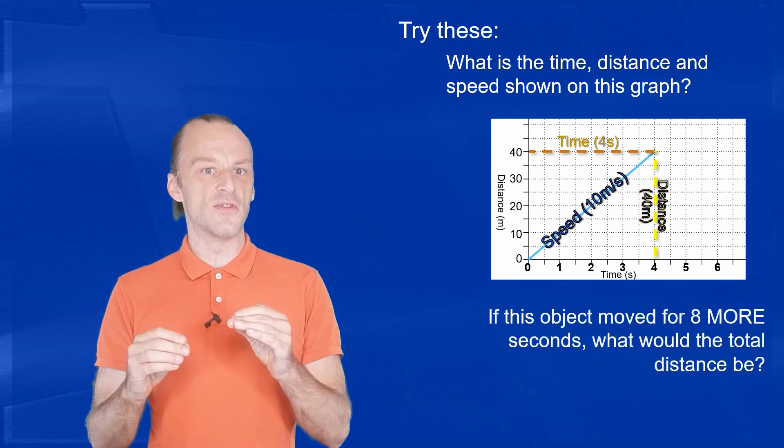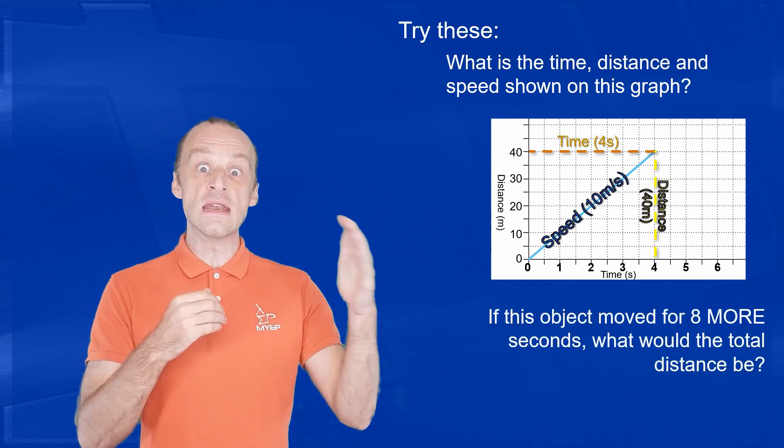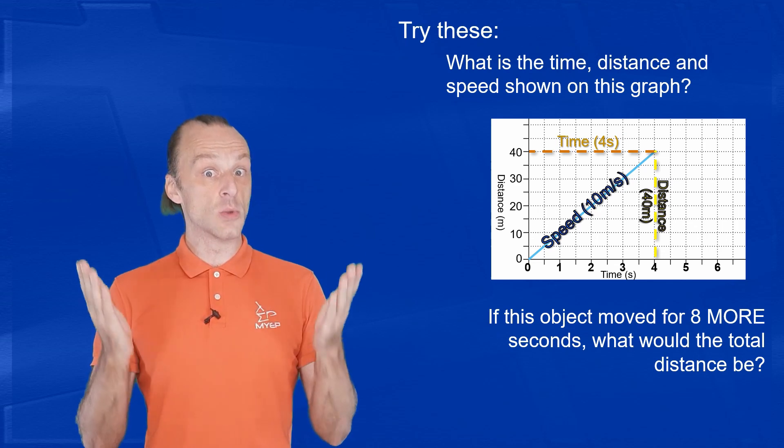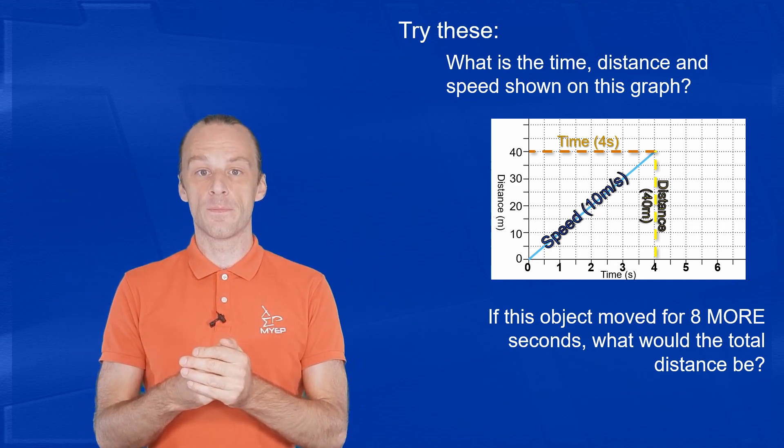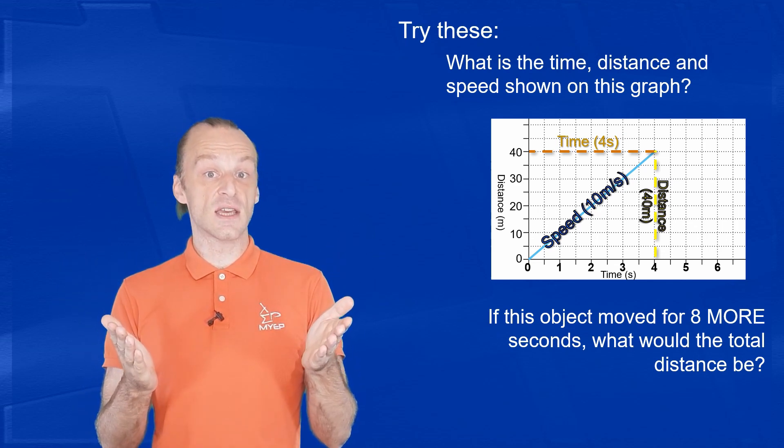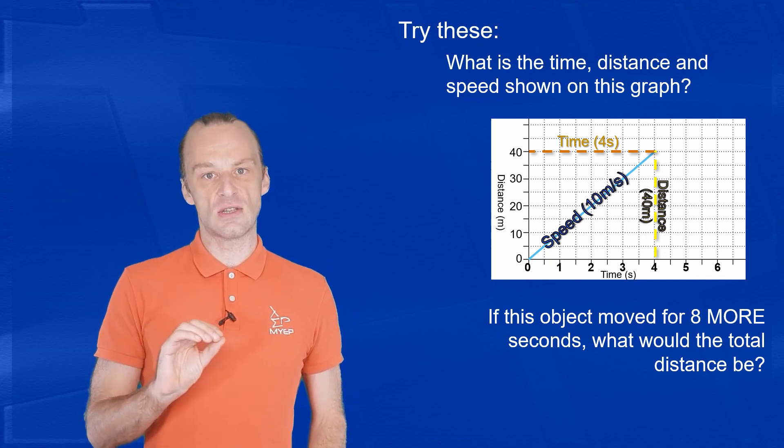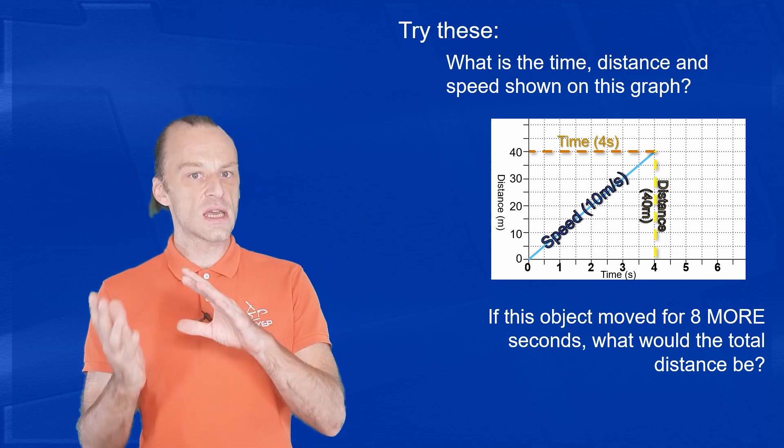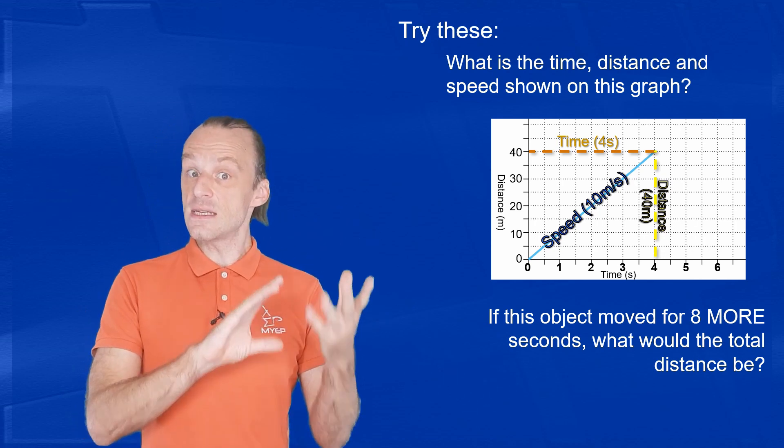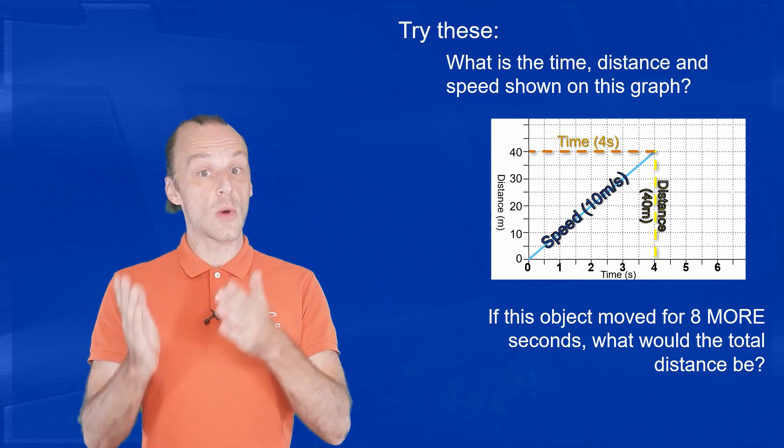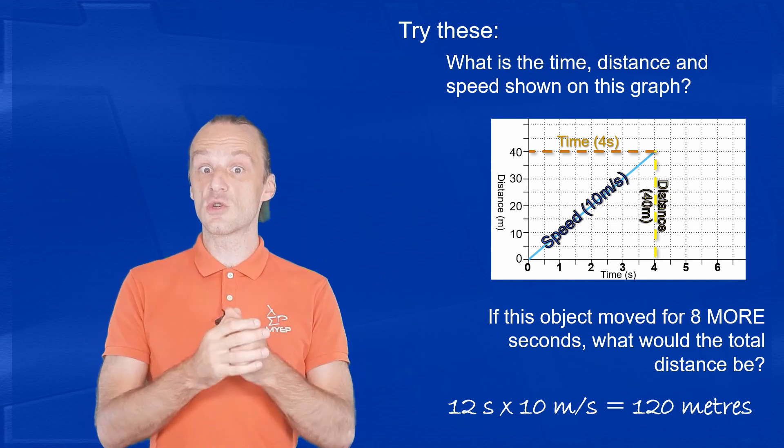As an extra question here, if this object kept moving at the same speed for another 8 seconds, what would the total distance be? After another 8 seconds, then the object will have been moving for 12 seconds total. So 12 seconds at a speed of 10 meters every second is 12 times 10, 120 meters.